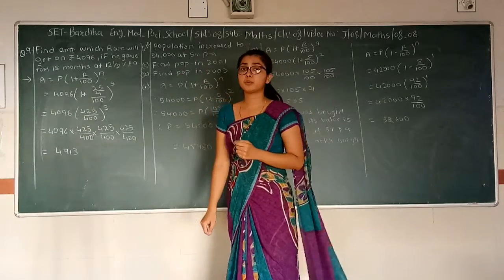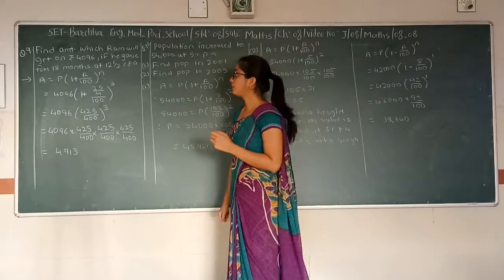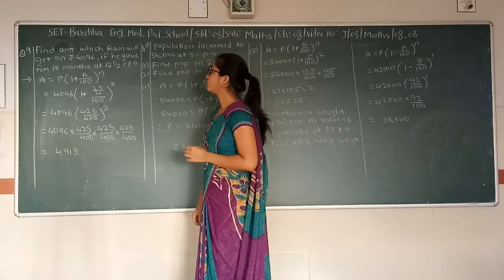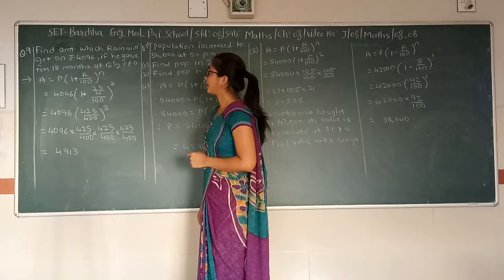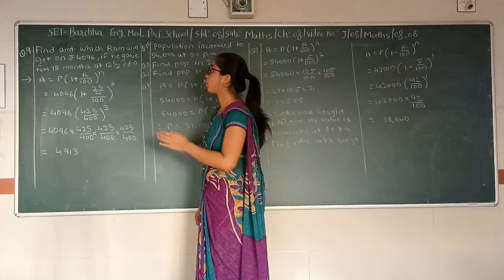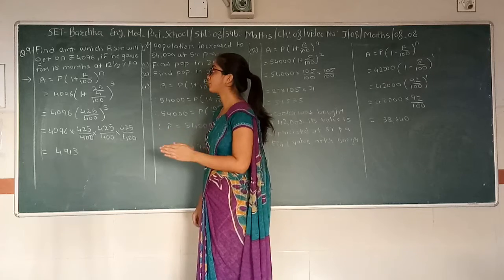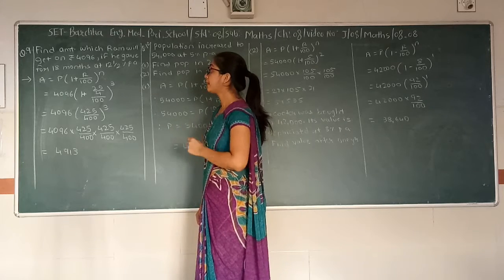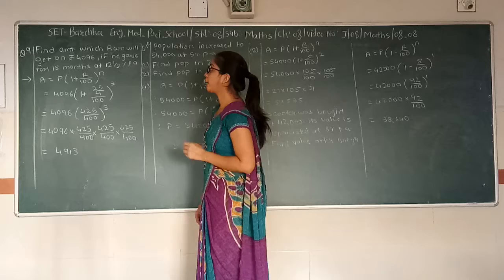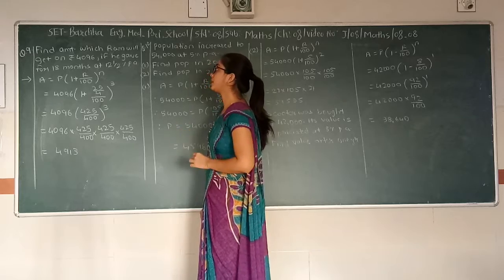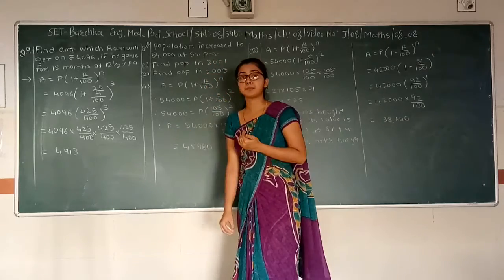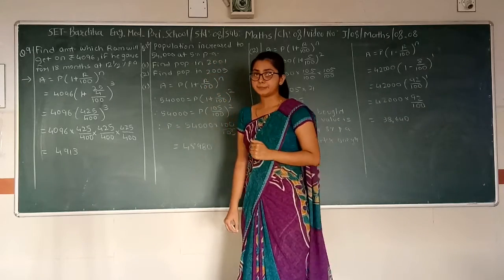Now we will continue with question number 9. Find the amount which Ram will get on rupees 4,096 if he invested it for 18 months at 12.5% per annum.